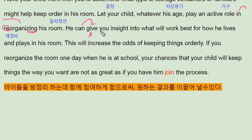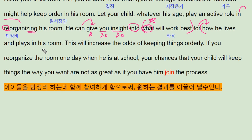He can 동사원형 줄 수가 있다. 너에게 insight를 줄 수가 있어. 간접 목적어죠. 직접 목적어가 insight — 시야를 줄 수가 있어. Into what will work best — what 또 해서 문법 주의하시고, 무엇이 가장 잘 work 작용할지를, for how he lives and plays in his room — 의문사 주어 동사 구조. 어떻게 그가 살지를 그리고 어떻게 그가 놀지를 그의 방에서 결정하는데, 그래서 전치사의 목적으로 쓴 간접 의문입니다.